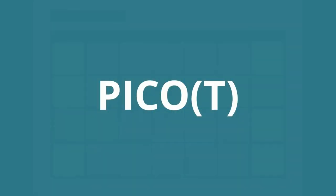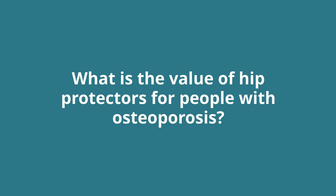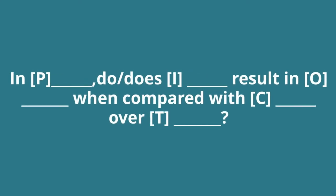Here are a few examples of PICO applied to different types of topics. Let's start with an example question about a therapy. My initial question could be something like, what's the value of hip protectors for people with osteoporosis? That's a little general, so I'll use PICO to refine it. The format of this question could be: in P, do or does I result in O when compared with C over T?